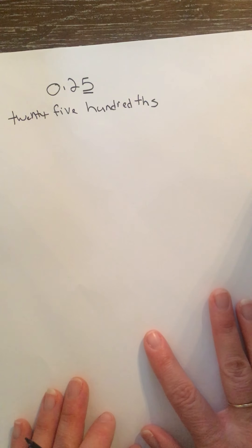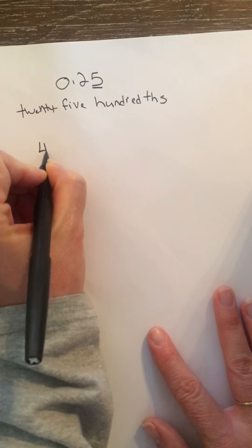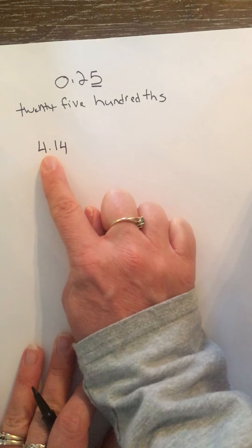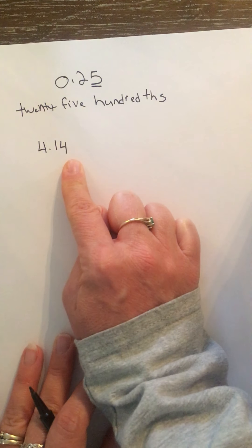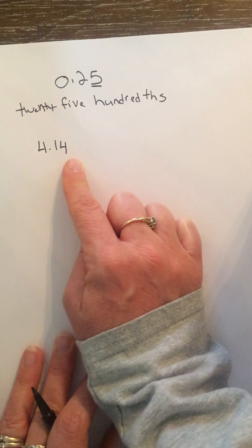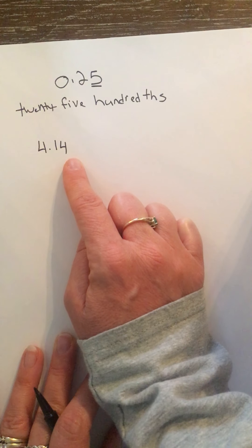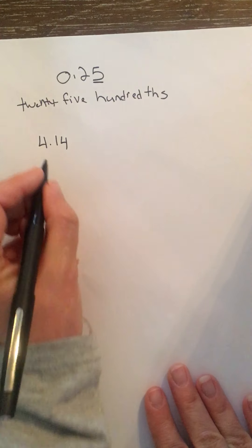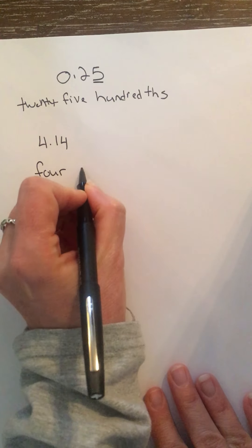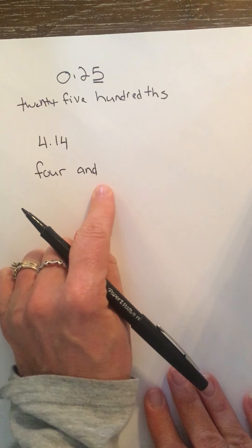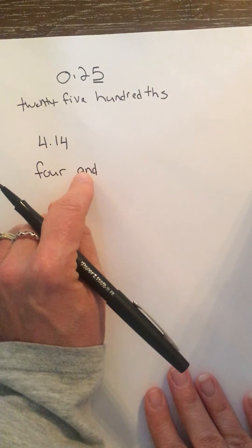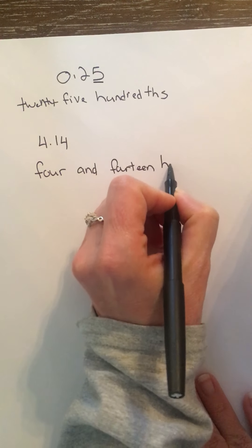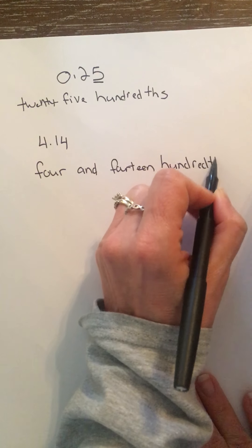A couple more of these. I have this decimal — I would say this as 'four and fourteen hundredths.' Make sure you know how to say it out loud first, because you're going to write exactly what you say: 'four and fourteen hundredths.' Anytime you write the word 'and,' that means the decimal point.